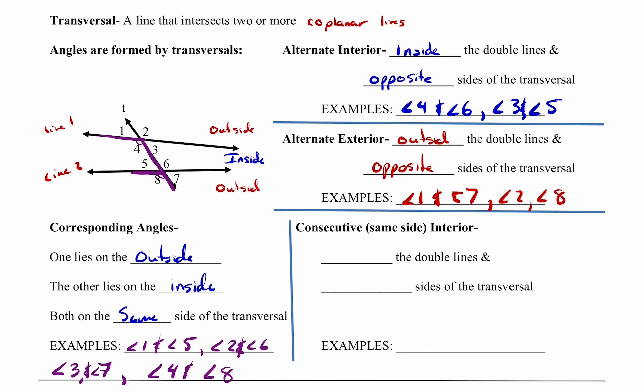The last term is consecutive same-side interior. Consecutive same-side interior angles are going to be on the inside of the double lines, and they're going to be on the same side of the transversal. Examples here would be angle three and angle six, and also angle four and angle five. There are our examples and our terms.